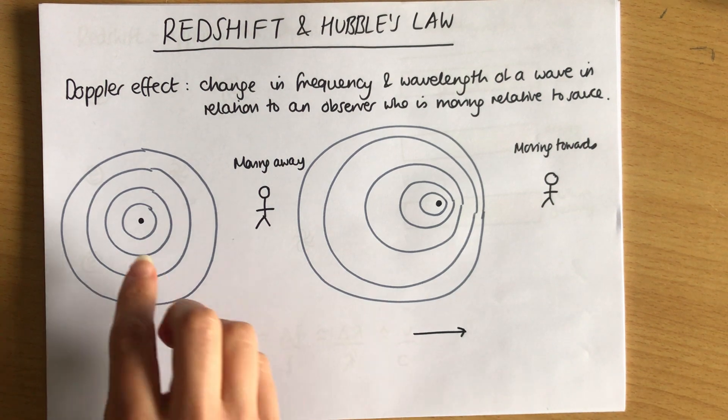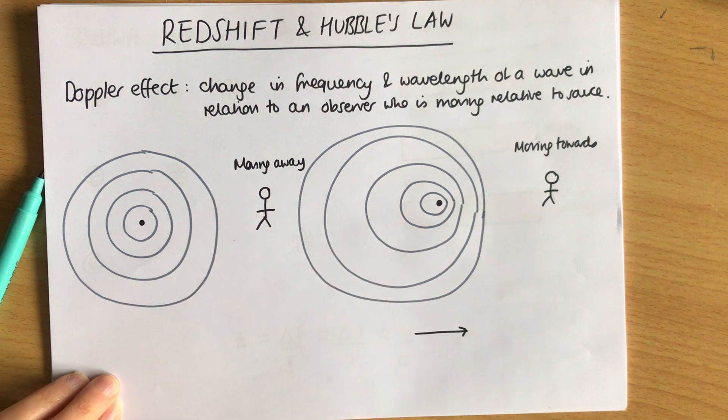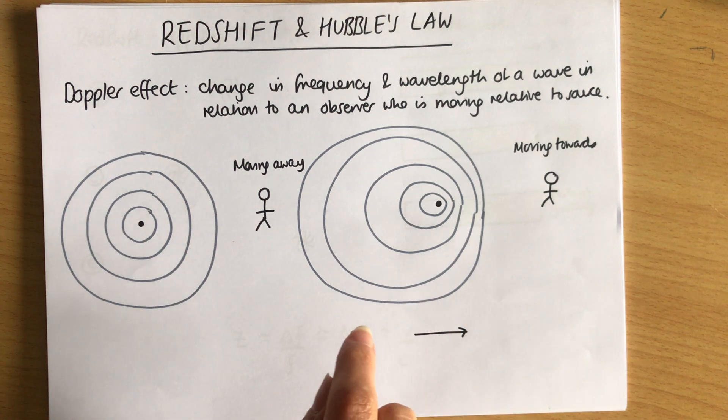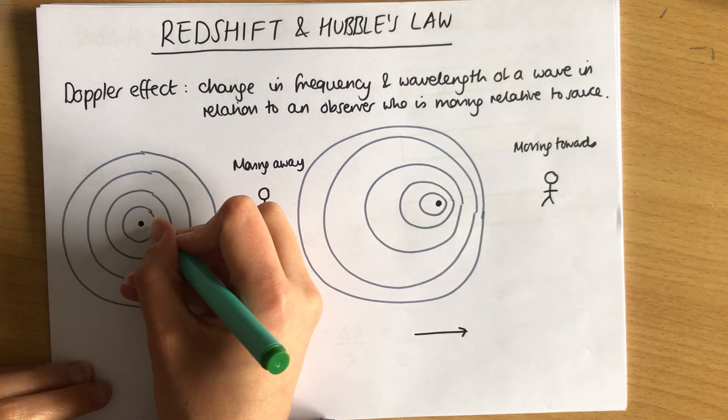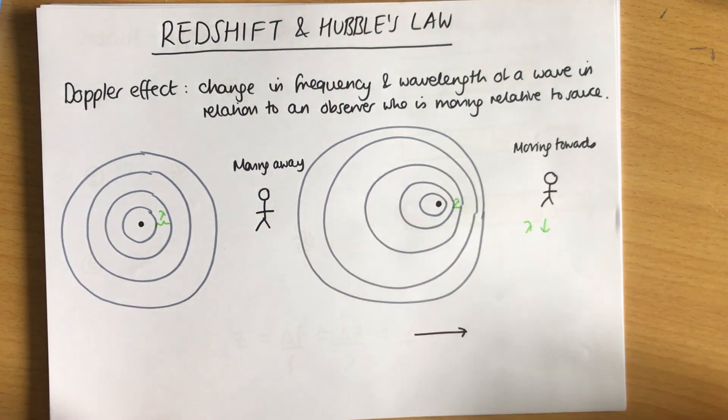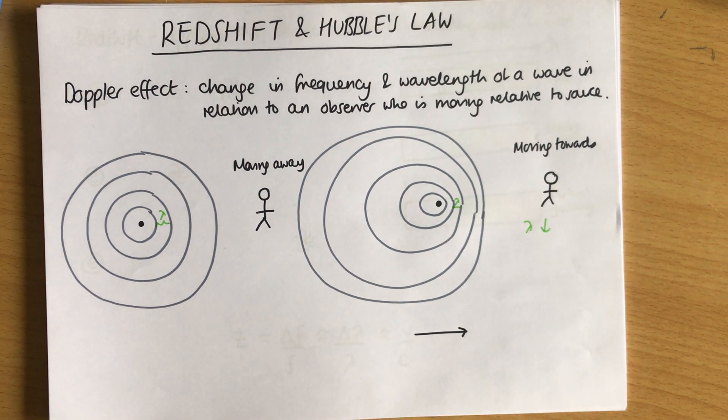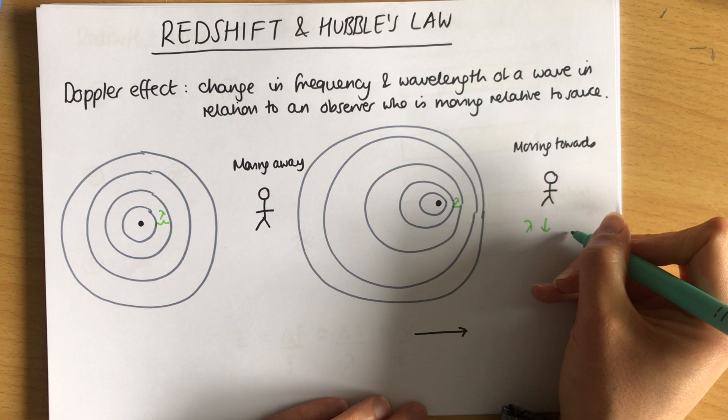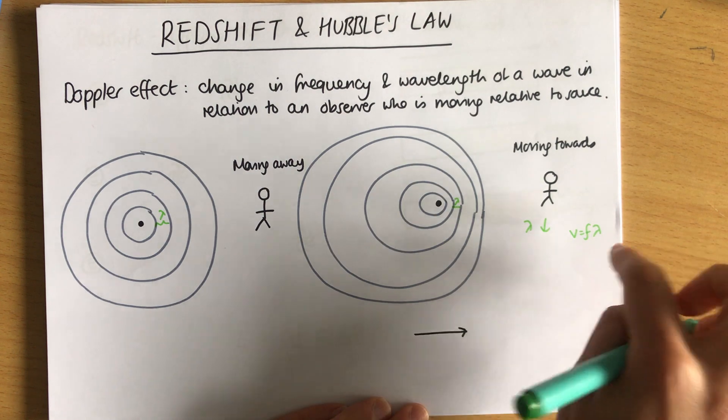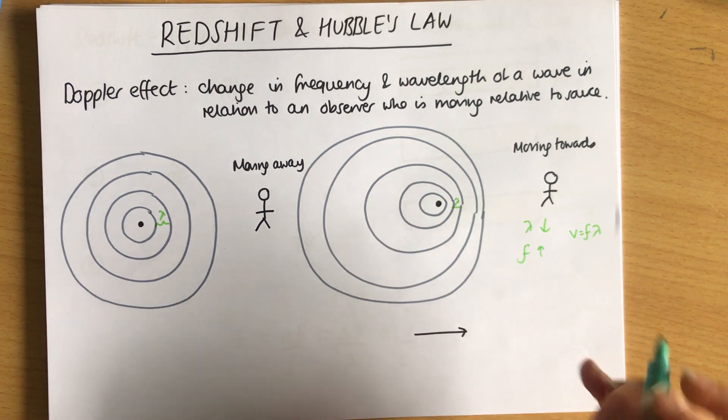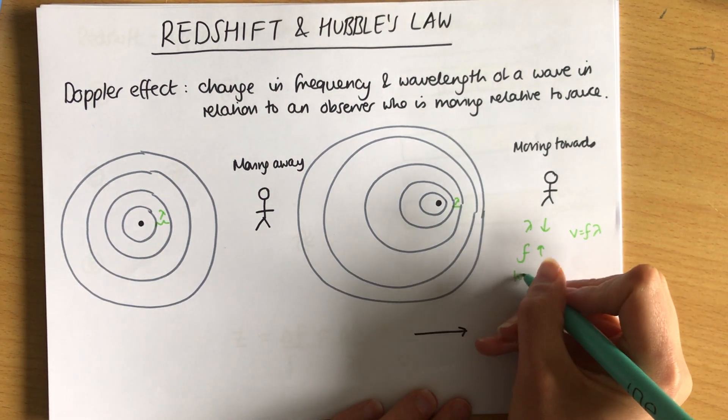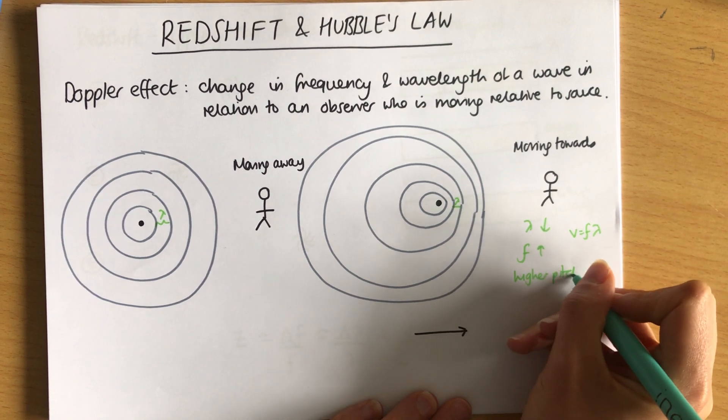Now what we've done is we've made these nice even wavelengths squash up or stretch out depending on which way the wave is travelling. So if the wave is moving towards you, the wavelength, this is the wavelength here lambda, the wavelength decreases. It's shunted together. This means that if we know that frequency times wavelength equals wave speed, and if the wavelength goes down, the frequency increases. So if this is sound, we would hear a higher pitch as it comes closer towards us.